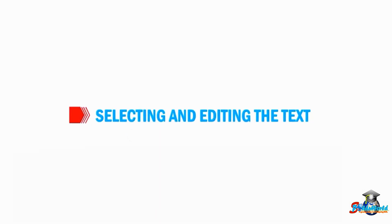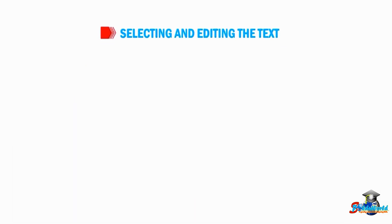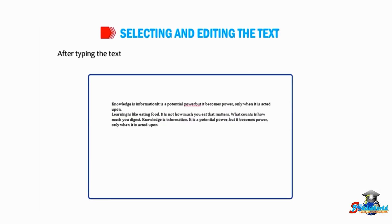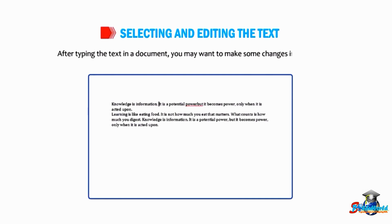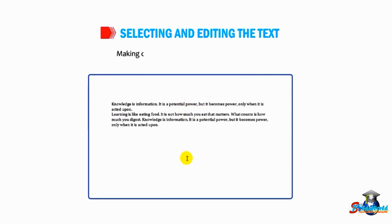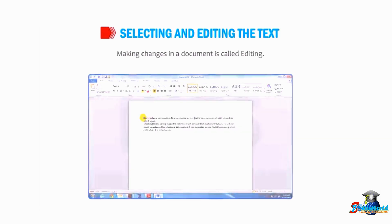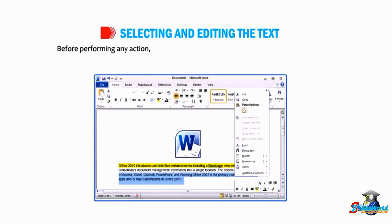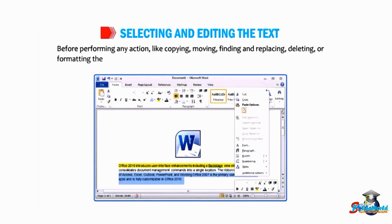Let us learn about selecting and editing text. After typing the text in a document, you may want to make some changes in the text. Making changes in a document is called editing. Before performing any action like copying, moving, finding and replacing, deleting, or formatting the text, we need to select the text.